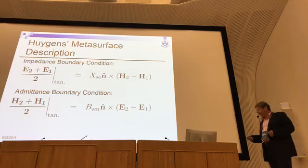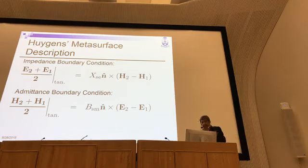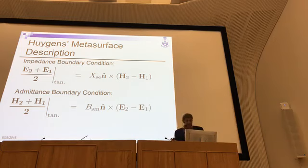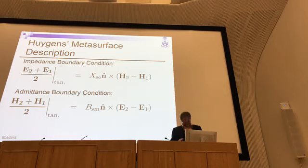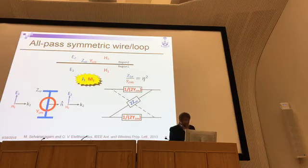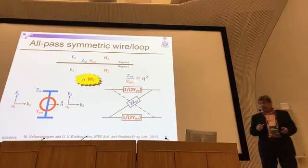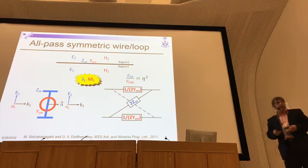The spatially variant impedance is superimposed on a spatially variant admittance, and then you can achieve the transformation you need. Of course there are other details you need to ensure this is a passive and lossless structure, and I will touch upon this aspect later. The first topic in this presentation is to explore the bandwidth.